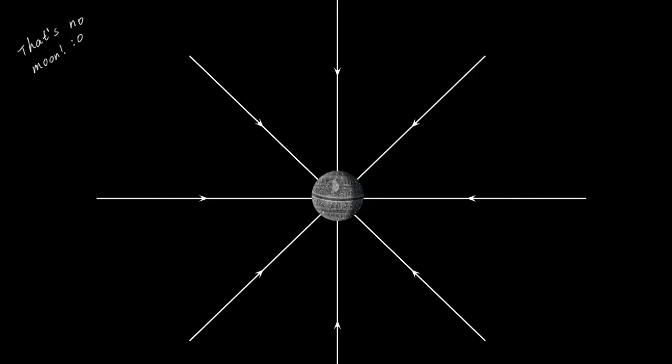This is the field line representation of a gravitational field around a moon, where instead of drawing vectors at every point, we use lines.